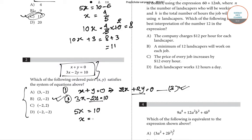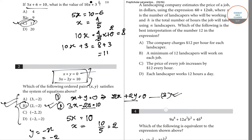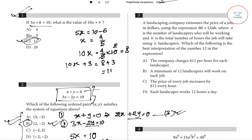Therefore x equals 10 divided by 5, which is 2. Substituting x equals 2 into equation 1 gives y equals −2. So the ordered pair is (2, −2), and option B is correct for question number 2.